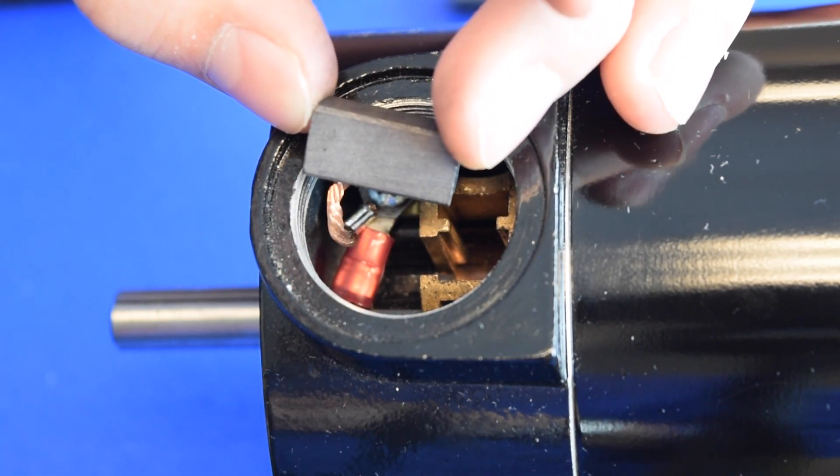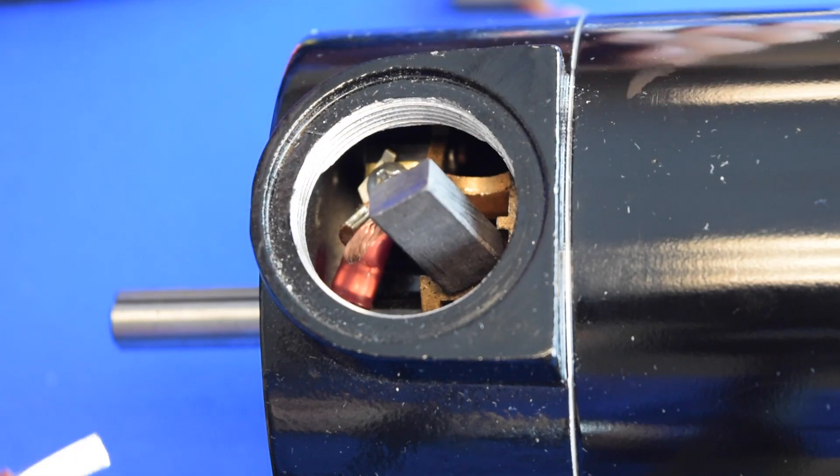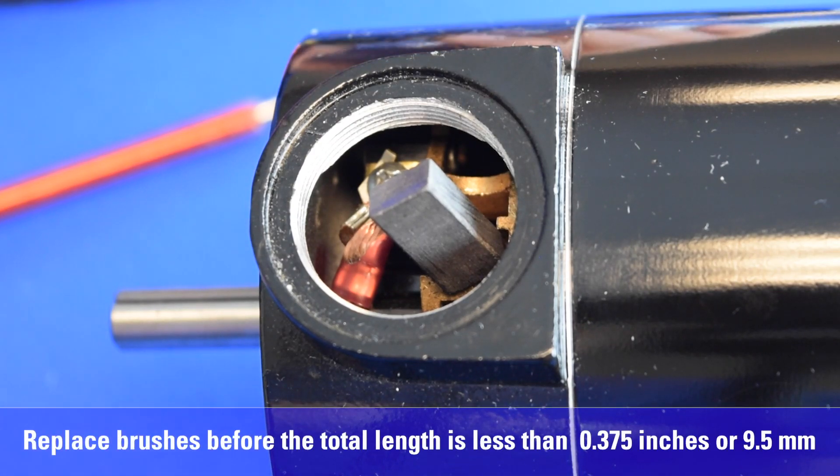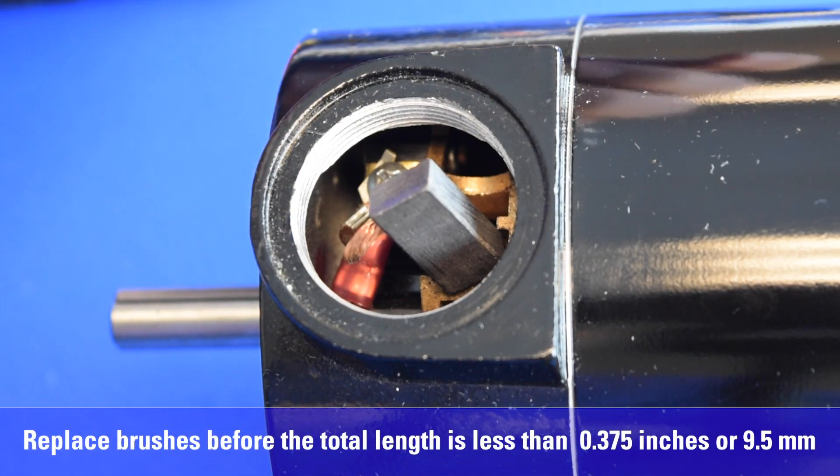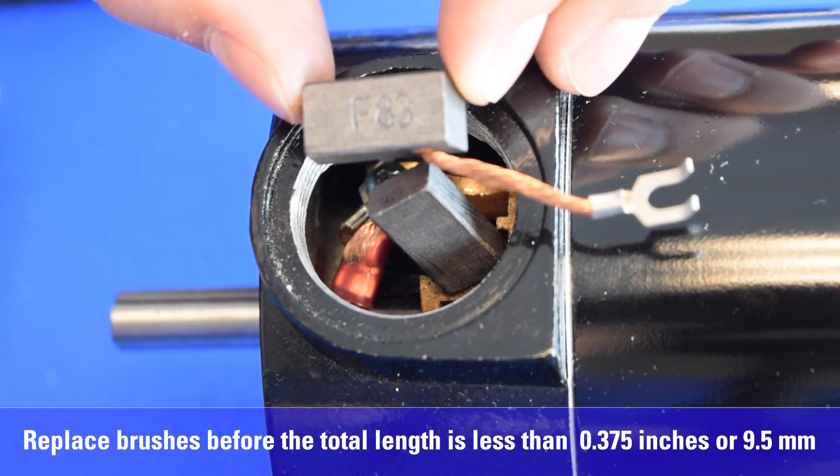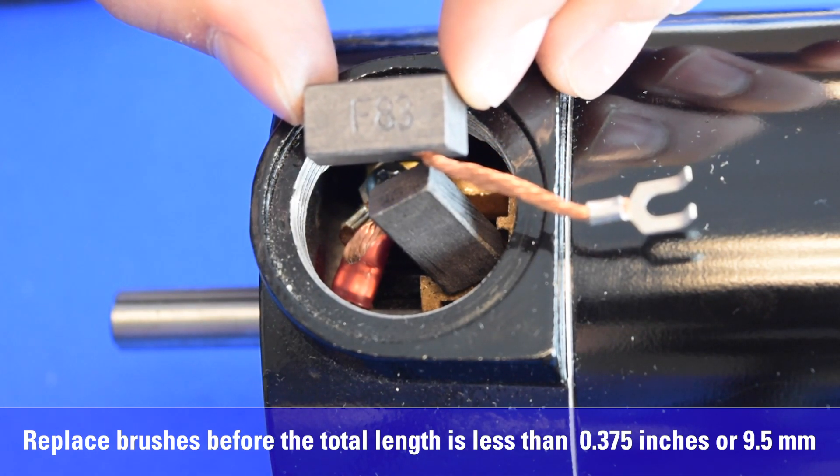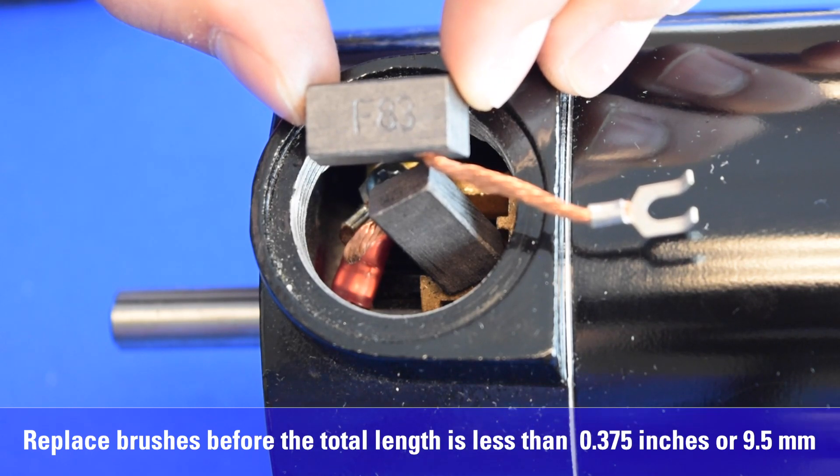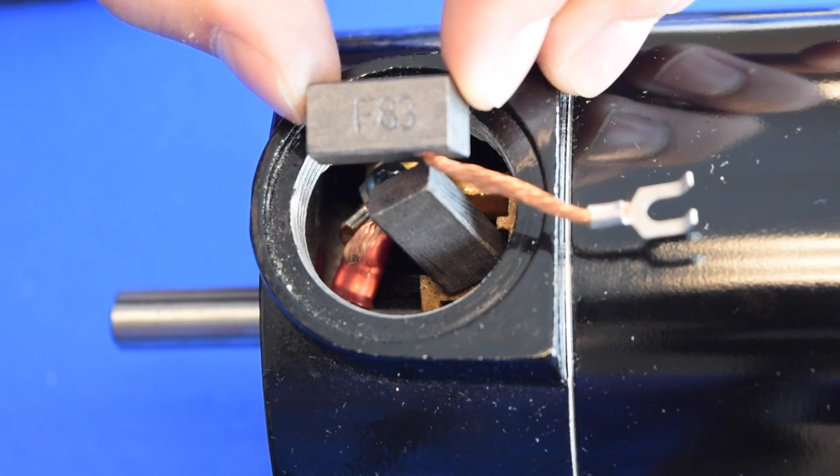Brush wear rates vary depending on the individual application's duty cycle and should be inspected at frequent intervals to determine an appropriate inspection schedule. Brushes for Bodine type 33A or 42A motors should be replaced before the total length is less than .375 inches or 9.5 millimeters. Repeat the inspection procedure for the other brush.